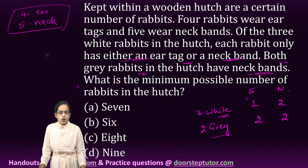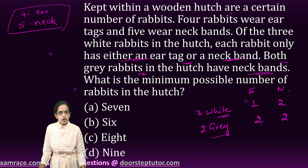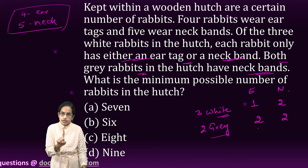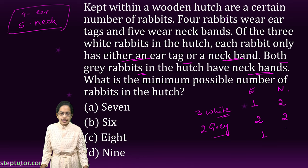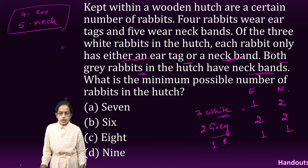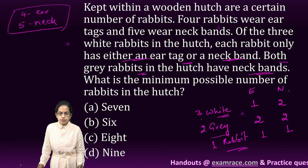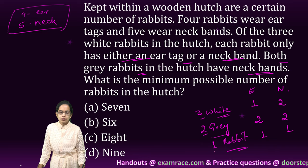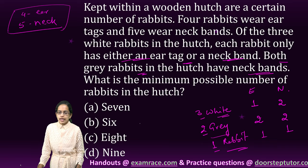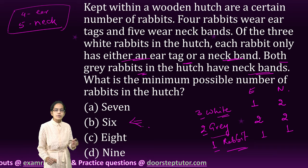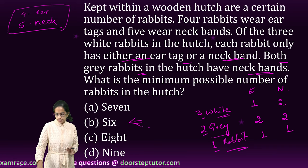Four neck bands are used and three ear tags are used. So one neck band and one ear tag remain. These can be allotted to one additional rabbit. So the minimum number of rabbits is three plus two plus one, which equals six.